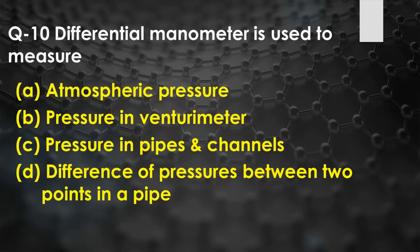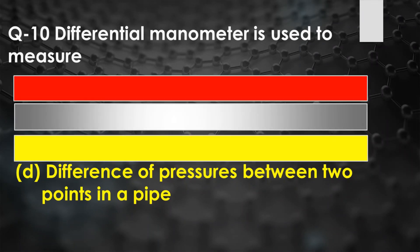Question number ten: A differential manometer is used to measure — option A: atmospheric pressure, option B: pressure in a venturimeter, option C: pressure in pipes and channels, option D: difference of pressure between two points in a pipe. A differential manometer is used to measure the difference of pressure between two points in a pipe. The right answer is option D.